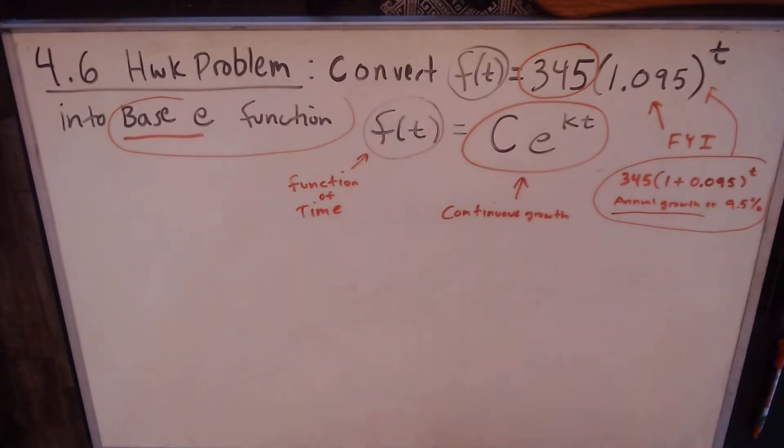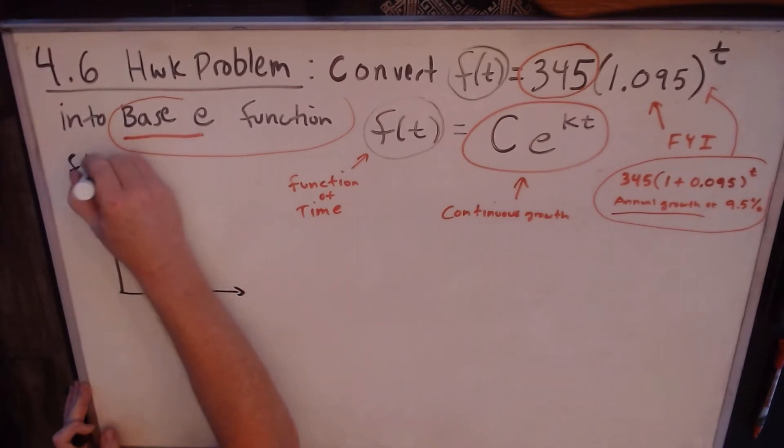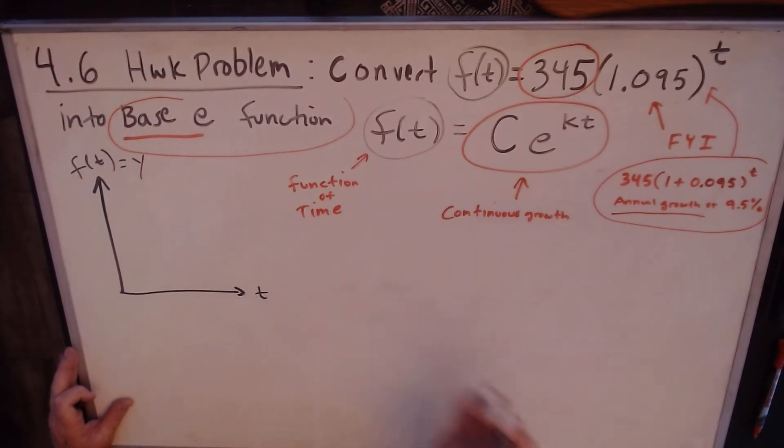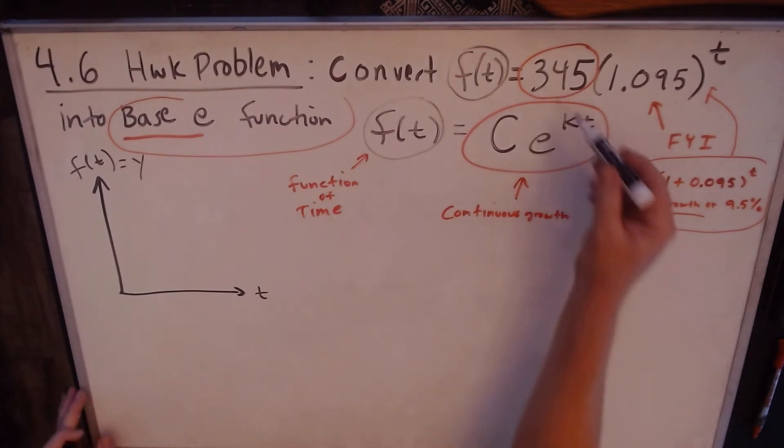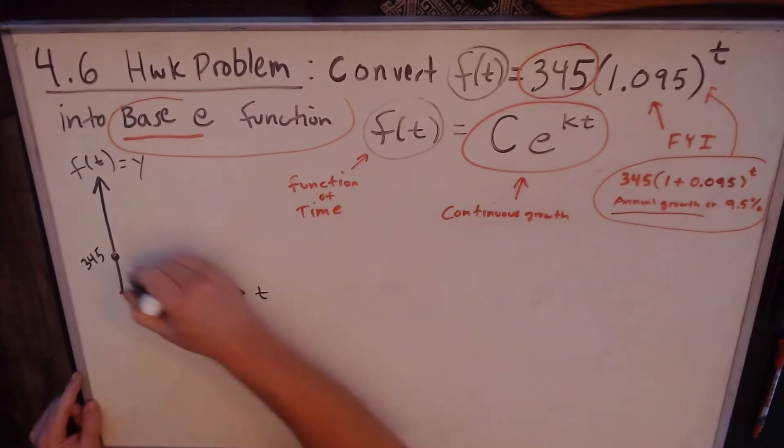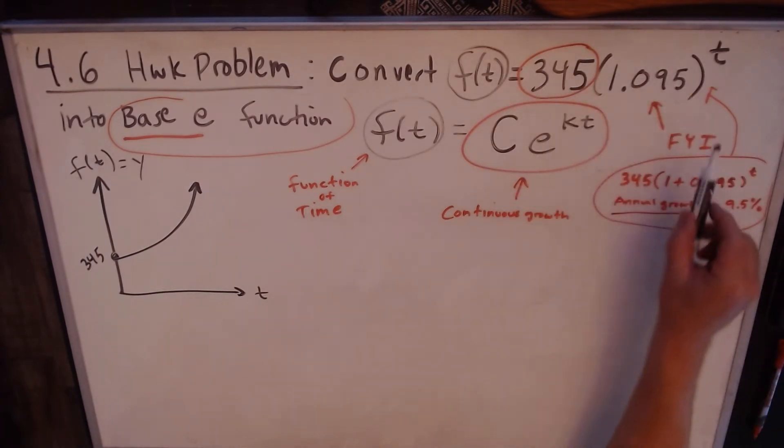Now f(t) is just an arbitrary name that I chose for a function of time, so both of these are functions of time. There are lots of different ways to represent a function. One of the more common ways is f(t) or f(x), but you've all had algebra before. If you're drawing a graph of this, it would just be y. So you have your f(t) is like your y-axis over here and then you have your t is like your x-axis.